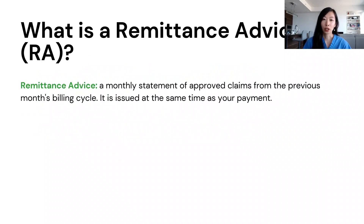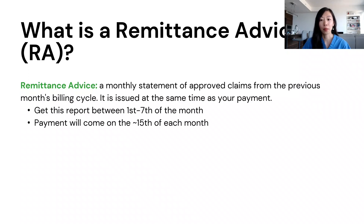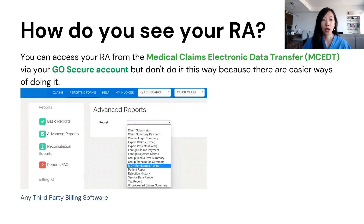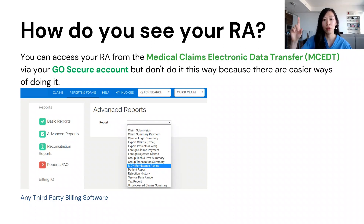Most doctors are independent contractors and they bill OHIP for the services that they provide. The RA is kind of like a receipt that the Ministry gives us to tell us what we got paid in the last month's billing cycle. This report comes out on the 1st to 7th of each month, and the actual payment hits your bank account around the 15th. A lot of sites will tell you to access your RA from the Medical Claims Electronic Data Transfer site, or MCEDT, that you can access by having a GoSecure account, but I don't suggest you do it that way. You can see your RA by going on any third-party billing software site — I've linked a timestamped lecture on that above and in the description below.